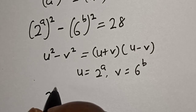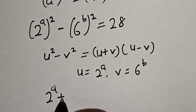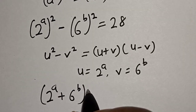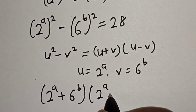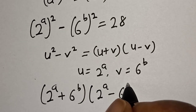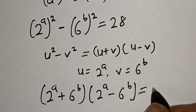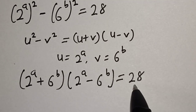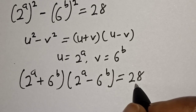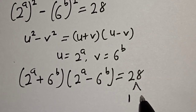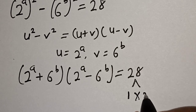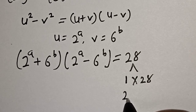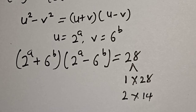We have 2 to the power of a plus 6 to the power of b, multiplied by 2 to the power of a minus 6 to the power of b, is equal to 28. Now since we are asked to find the positive integer solution, 28 can be written as 1 times 28, then 2 multiplied by 14.